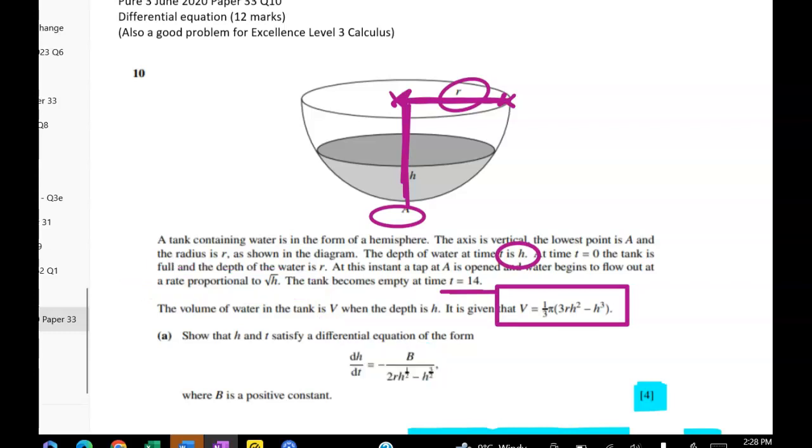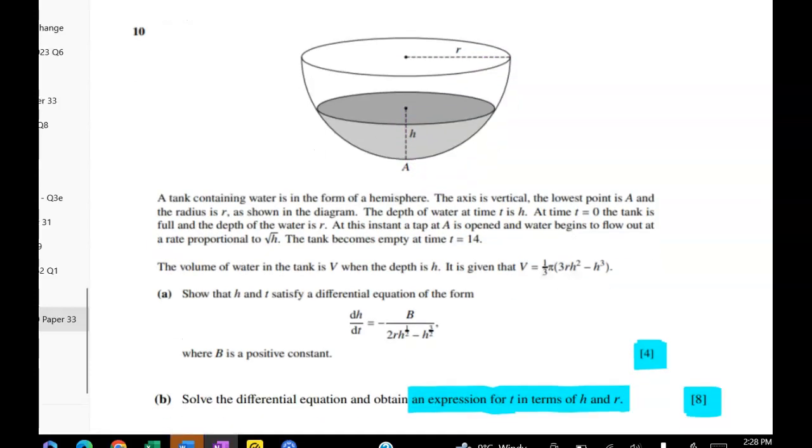So the first thing we have to do is to show that the link between H and T is given to us by this differential equation. So dH/dT is equal to that. The first fact that we were given is that the water flows out at a rate proportional to root H.